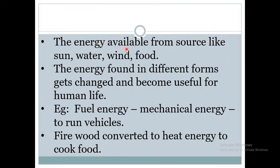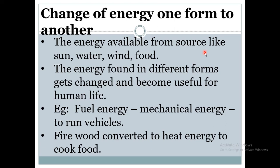The energy available from sources like sun, wind, water, and food are different forms of energy, and these forms of energy get changed and become useful for human life. For example, fuel energy gets converted into mechanical energy, which is used to run vehicles. Energy can change from one form to another — firewood gets converted into heat energy, which is used to cook food.